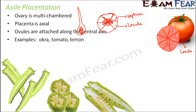In okra, the cross-section is divided into separate locules with ovules present towards the center. When you cut it lengthwise, you can see the ovules are all attached to the central axis. This central axis is what holds them. Examples of axile placentation include okra, tomato, and lemon.